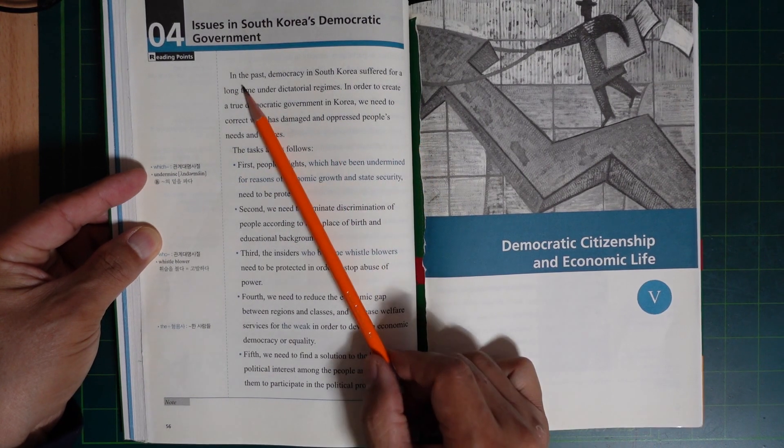Third, the insiders who become whistleblowers need to be protected in order to stop abuse of power. Fourth, we need to reduce the economic gap between regions and classes and increase welfare services for the weak...